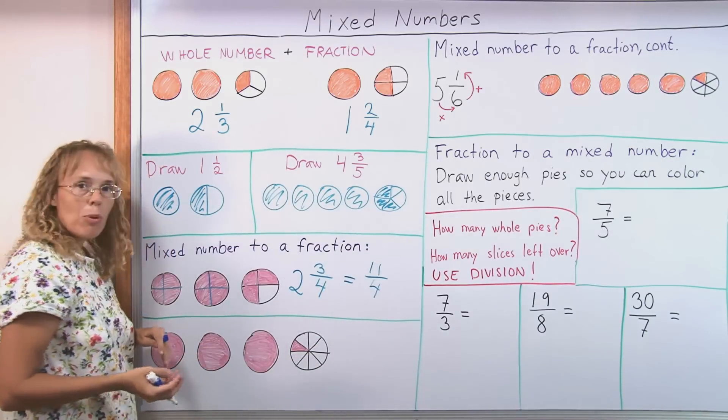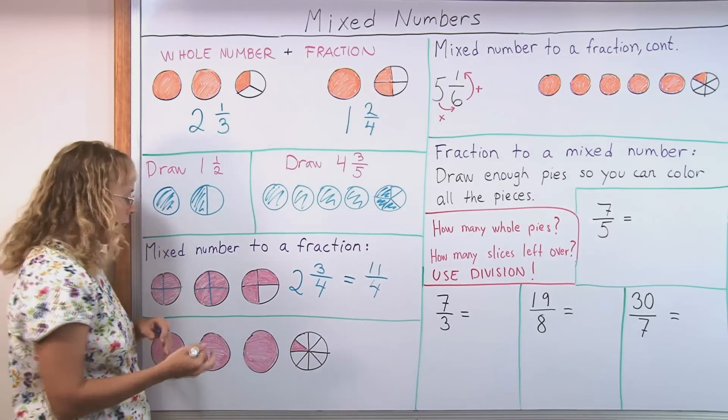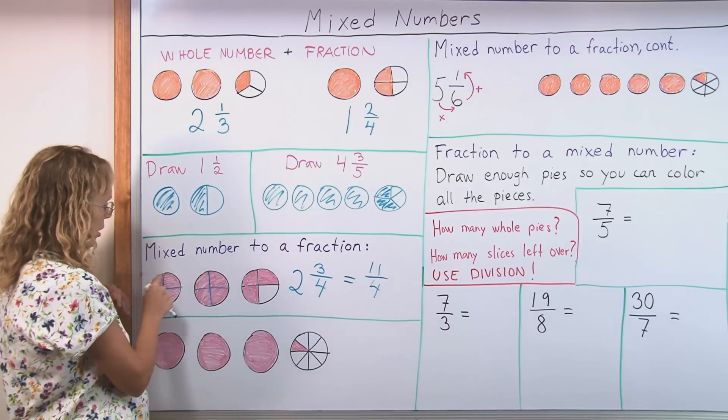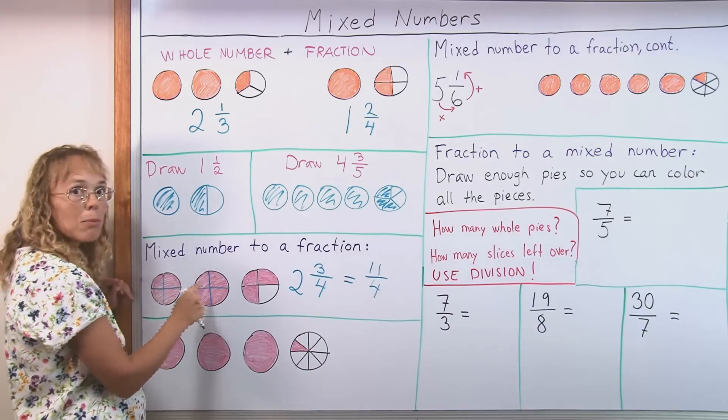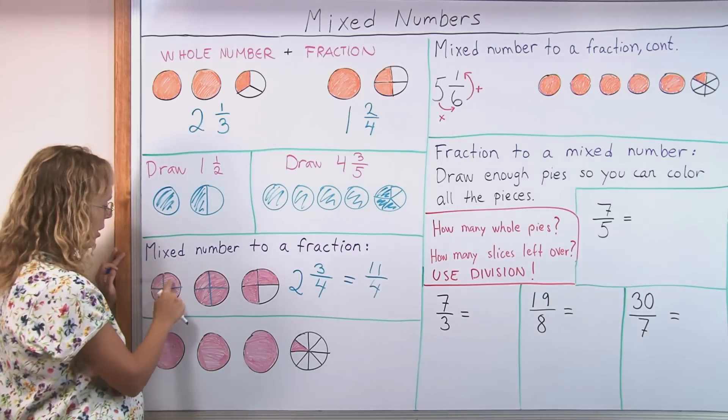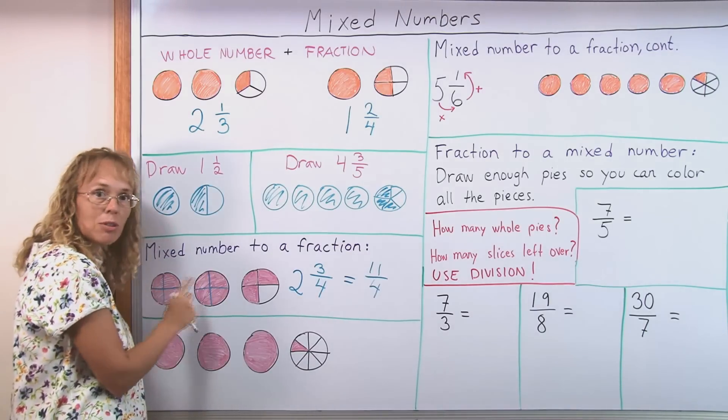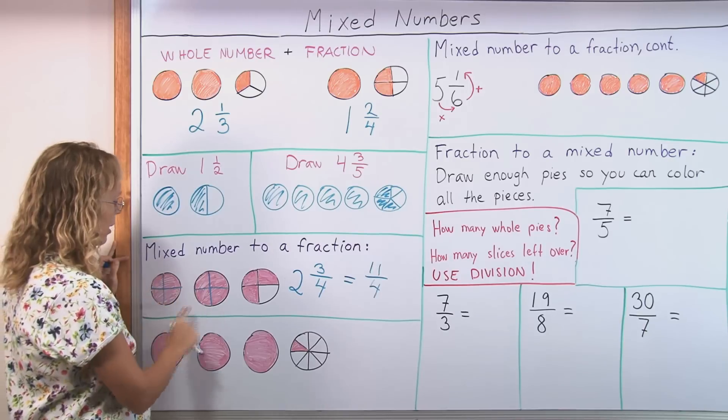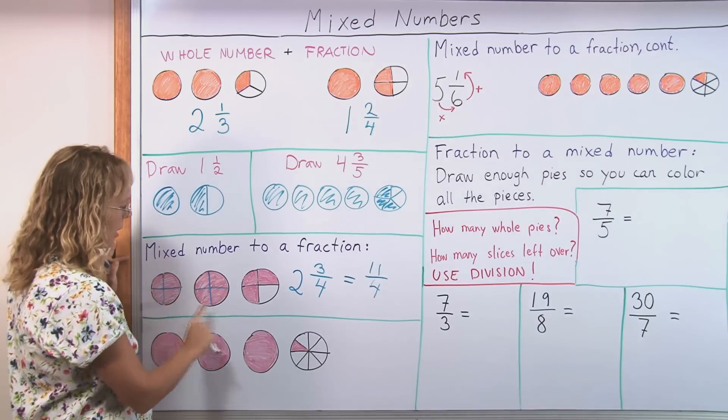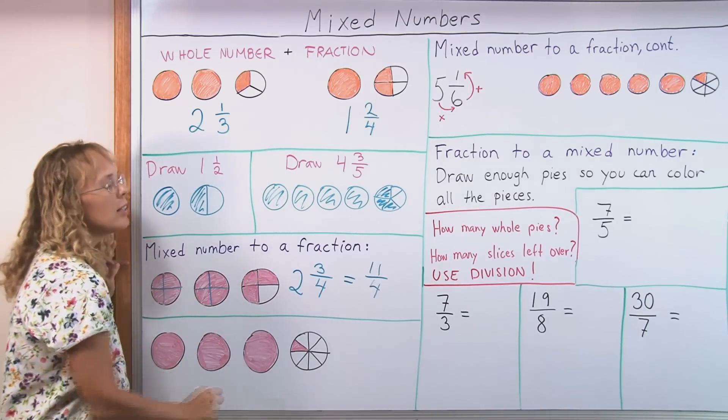And of course you want to point out to students at some point that there is a shortcut where they don't have to count one by one but they can use multiplication to figure out how many fourths are in these two whole pies. It's just two times four, right? Two times four would be eight. Eight slices here and then three slices here. Total eleven.